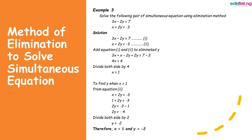For this example, we have 3x minus 2y equal to 7 as equation 1, and x plus 2y equal to minus 3 as equation 2. If we consider the coefficient of x in both equations, we have 3 and 1, so we can't eliminate x. If we consider the coefficient of y in both equations, we have minus 2 and plus 2, and adding these gives 0. That way, we can easily eliminate y.